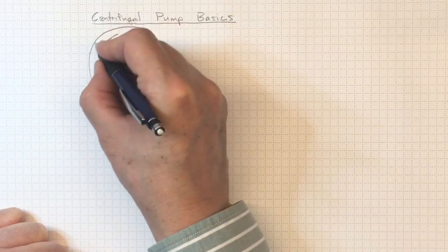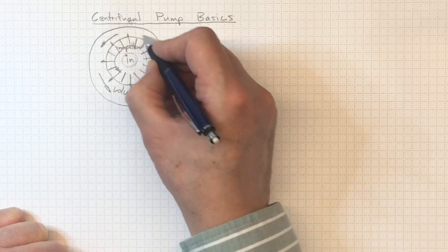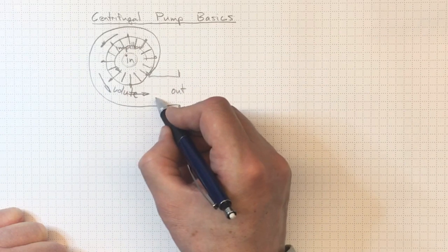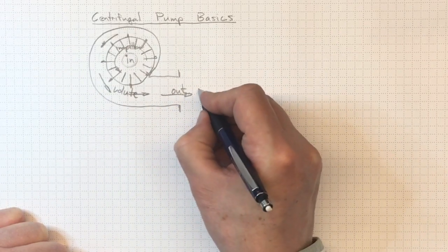The volute is increasing in cross-section to account for the fact that there's a little bit coming out of here, more coming out of here, so there's got to be room for all of it as we come around here. And finally, we've got flow coming out of the discharge here.